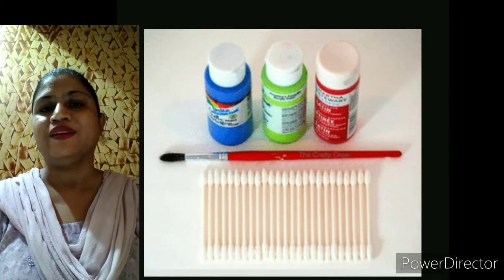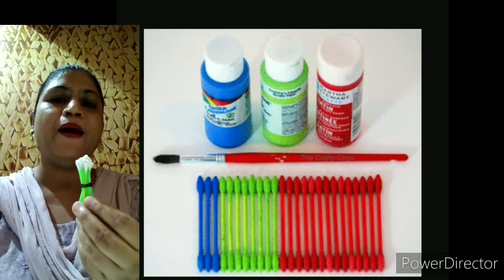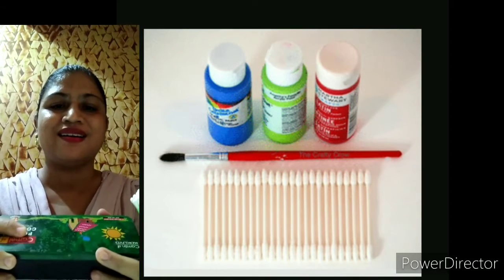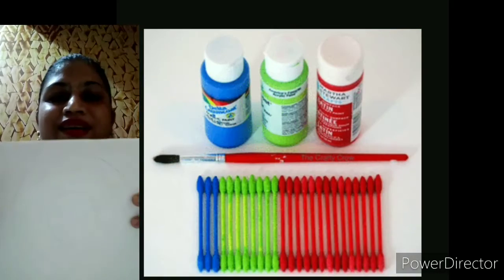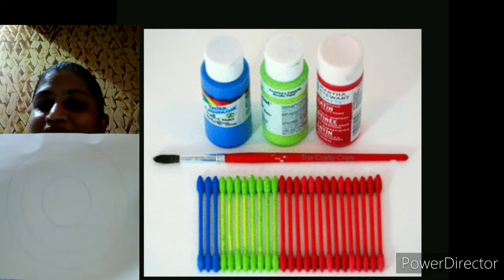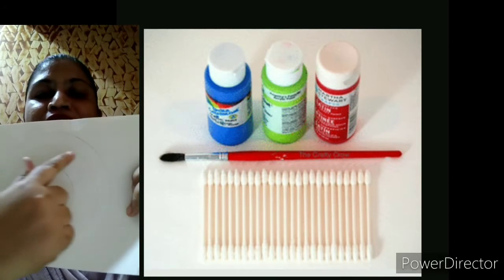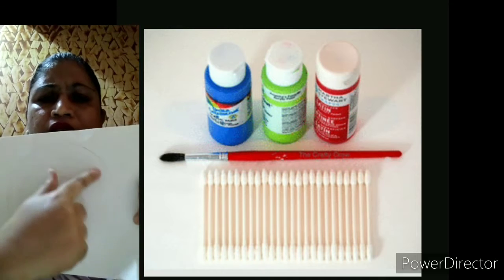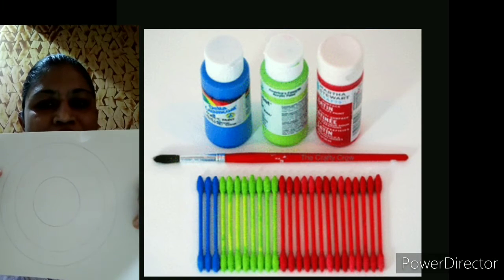For that, you need cotton bud and a poster color. Kids, take out your plain drawing book and make a circle or any object you like.